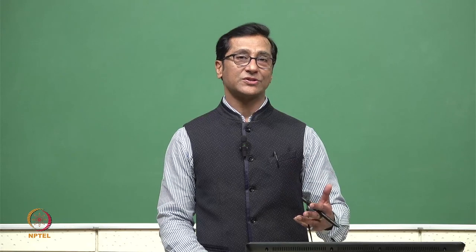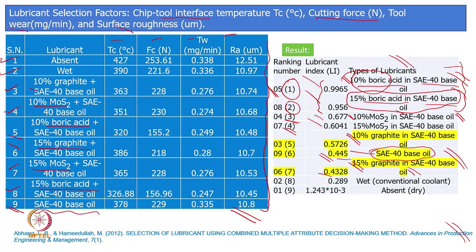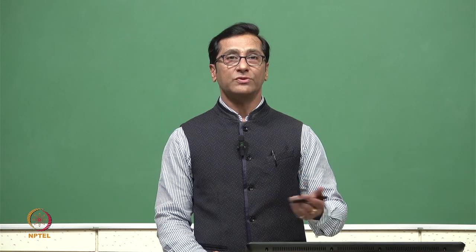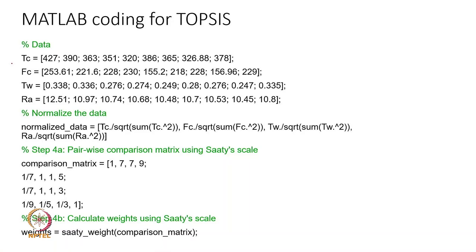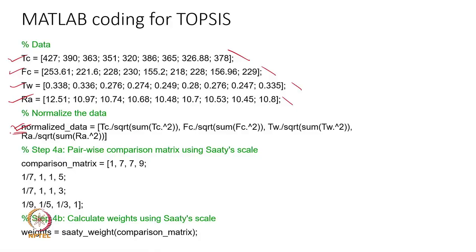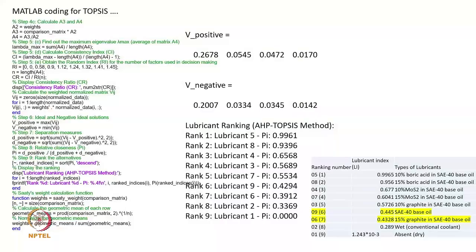The data is encoded as temperature (TC), cutting force (FC), tool wear (TW), and surface roughness (Ra). Normalization is required because units differ across parameters. AHP provides relative weights, and results are ranked using these weighted normalized scores. Our implementation using the weighted objective method from Lecture 14 produces rankings consistent with the TOPSIS results from the paper, with slight variation only at ranks 6 and 7.